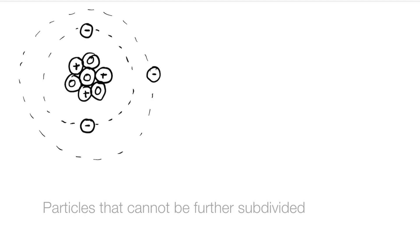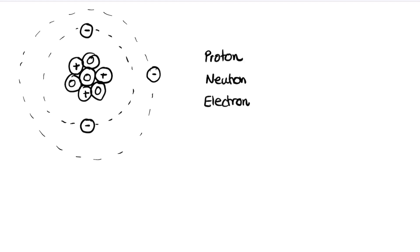We now need to compare the different types of particles that make up the atom. As you'll see, the proton and the neutron are fairly similar, but the electron is slightly different. Electrons are actually fundamental particles; however, protons and neutrons can be subdivided into quarks — but that's for a later video. I'm now going to draw out a table covering the general properties of these three particles.